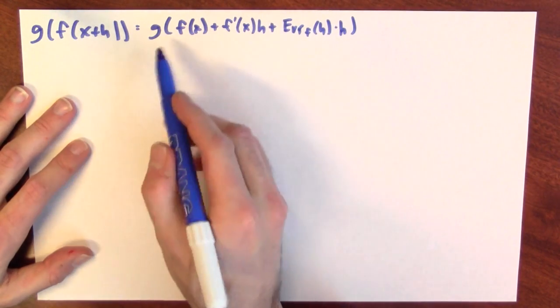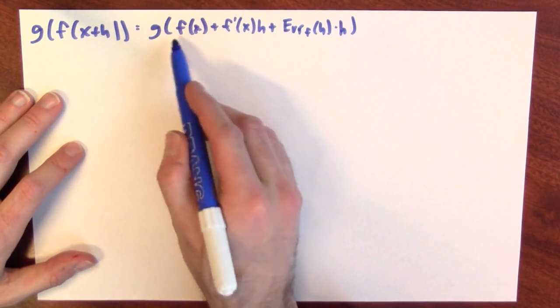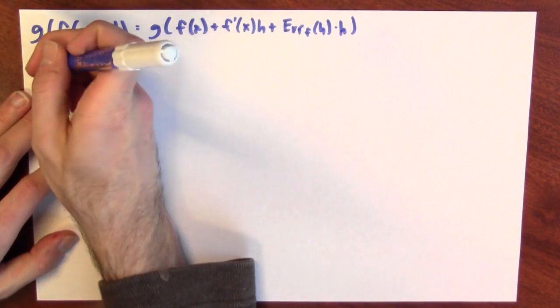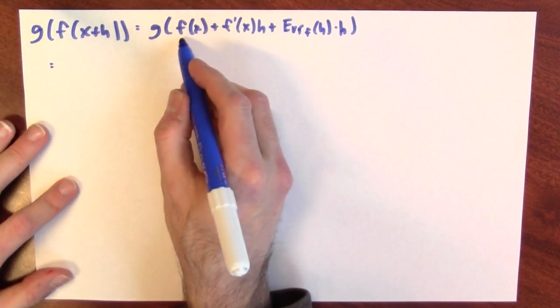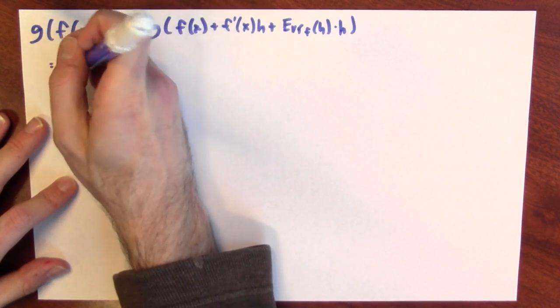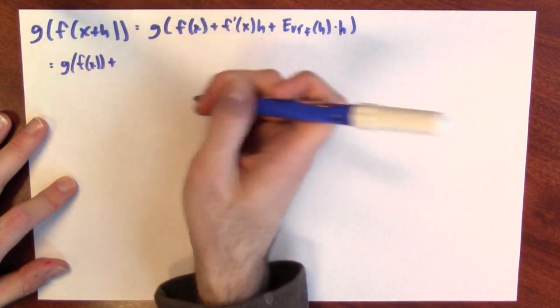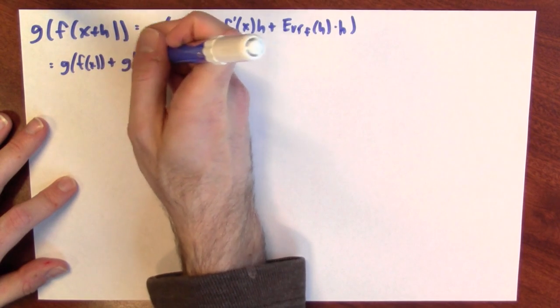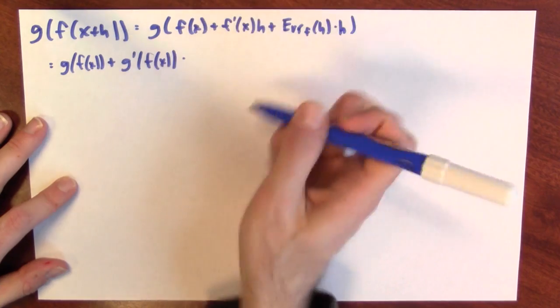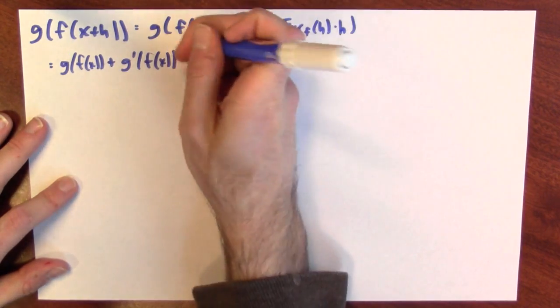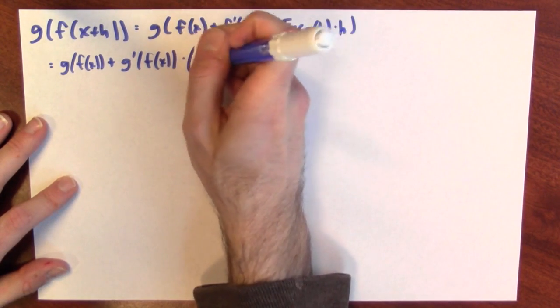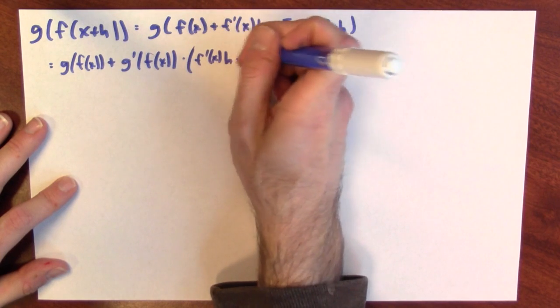Now, I'm going to play the same game with g. This is g of f of x plus a small quantity. And if I assume that g is differentiable at the point f of x, then this is g of f of x plus the derivative of g at f of x times how much I wiggled by, which in this case is f prime of x h plus that error term.